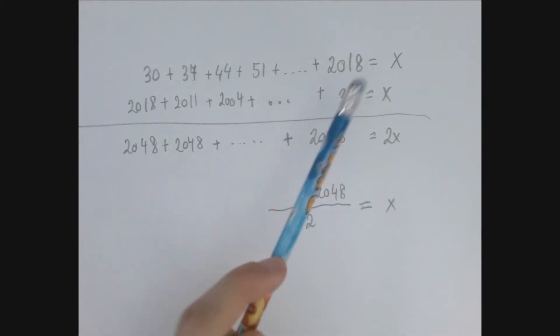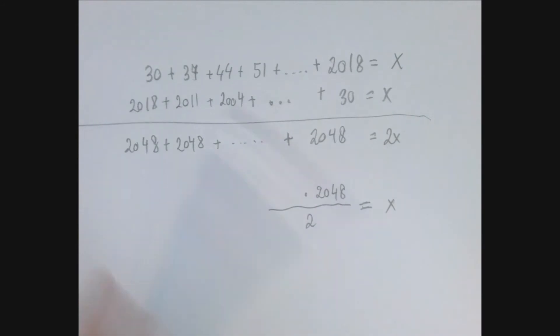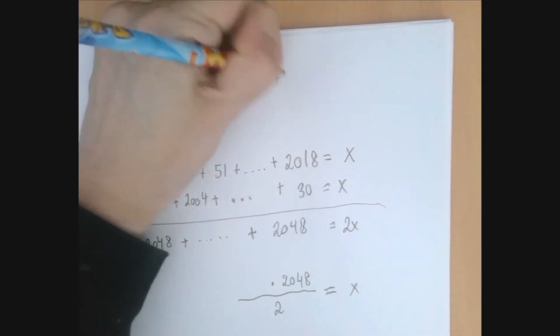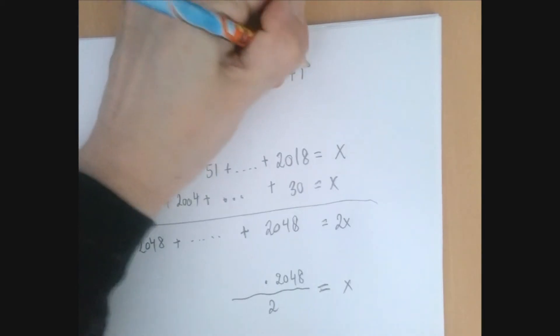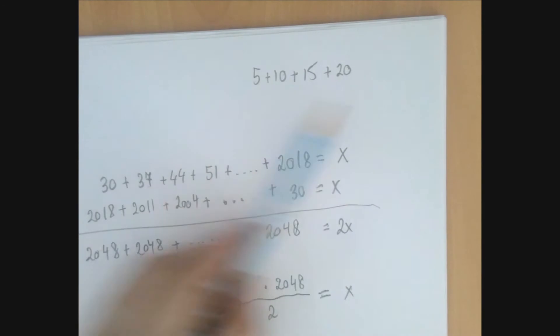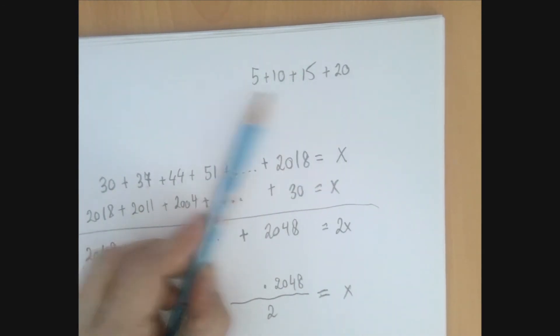If you say, okay, I'm going to subtract 2018 and 30 and divide the difference by 7, you're going to be off. Let me just show you why. If we say we have to find 5 plus 10 plus 15 plus 20, there are four numbers here. But what do we get if we apply that technique? 20 minus 5 is 15 divided by 5 is 3. So we're off.